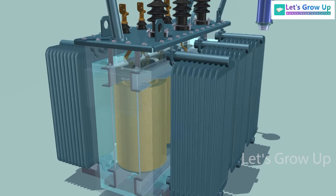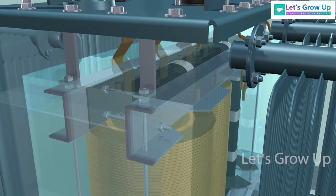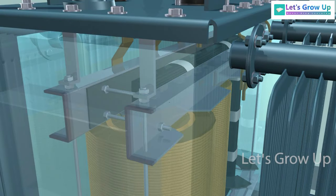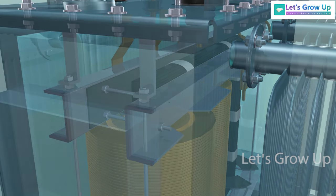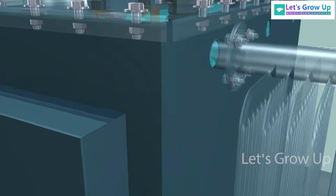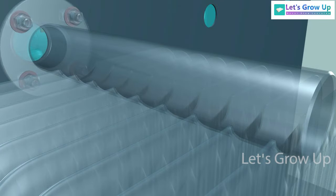As per the heat transfer law, the warm oil increases in volume and comes to the upper portion of the main tank. Now, heated oil enters the radiator through the top header pipe.